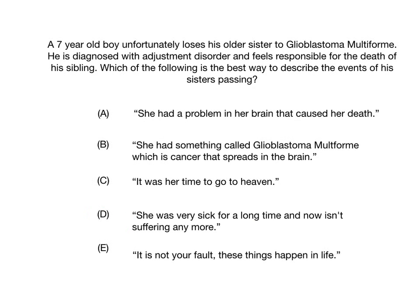Case two: A seven-year-old boy loses his older sister due to glioblastoma multiforme. He is diagnosed with adjustment disorder following her death and he feels responsible for the death of his sibling. Which of the following is the best way to describe the events of his sister's passing? A: She had a problem in her brain that caused her death. B: She had something called glioblastoma multiforme, which is cancer that spreads in the brain. C: It was her time to go to heaven. D: She was very sick for a long time and now isn't suffering anymore. E: It is not your fault — these things happen in life.